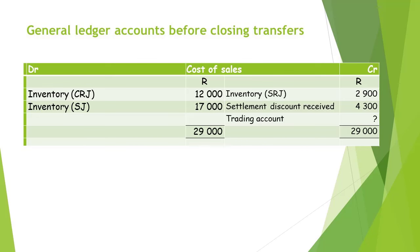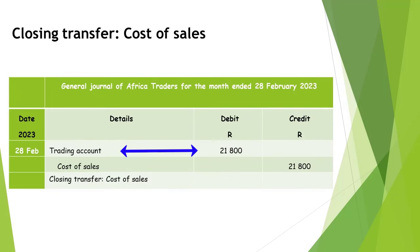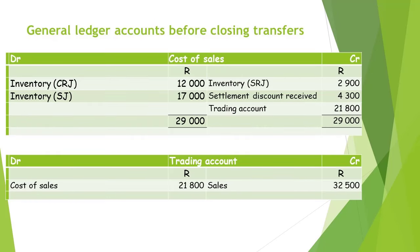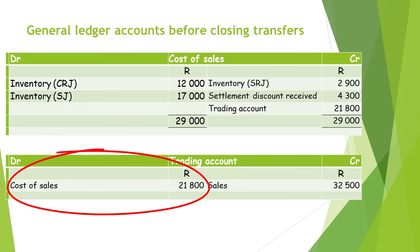In order to close the cost of sales account, we will need an entry on the credit side. Remember that a closed account will have a zero balance, which means that the total of the account on the debit side must be equal to the total on the credit side. The trading account will be debited with 21,800 rand and the cost of sales account will be credited with 21,800 rand. After posting the closing transfer journal entry to the general ledger, the cost of sales account will now have a zero balance and the trading account will have an entry relating to cost of sales on the debit side, amounting to 21,800 rand.